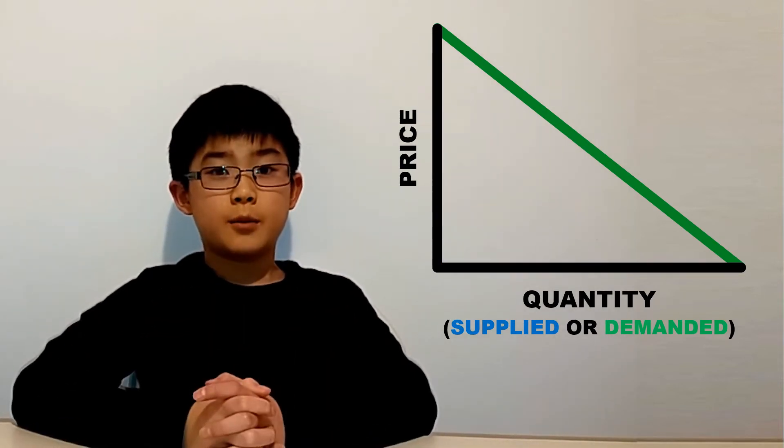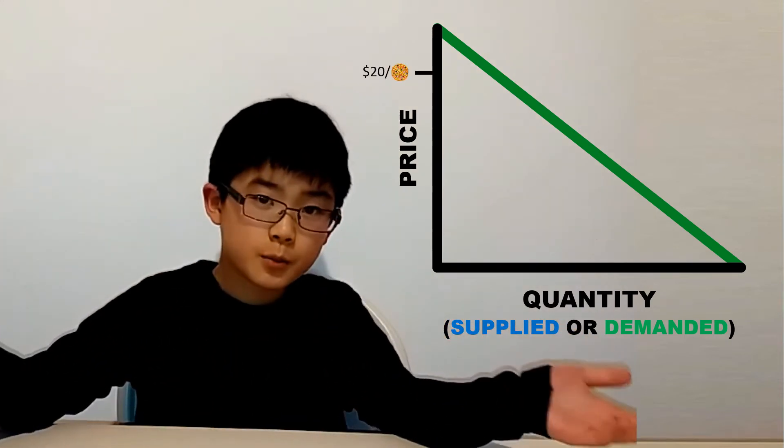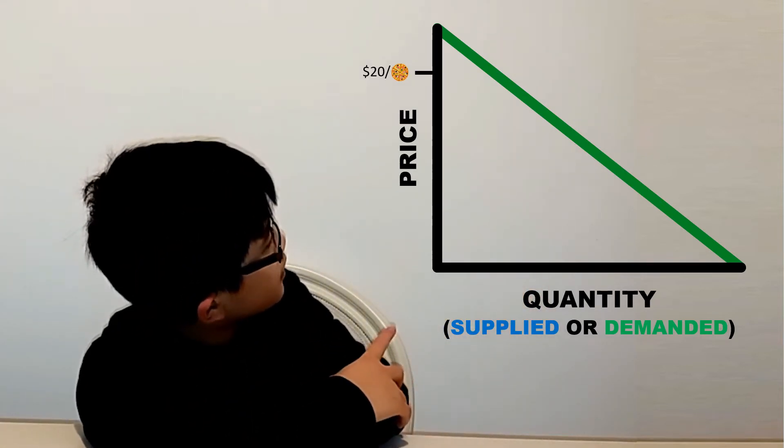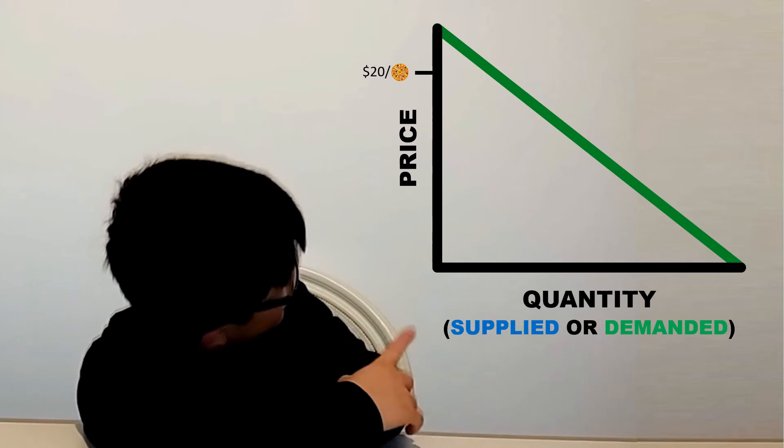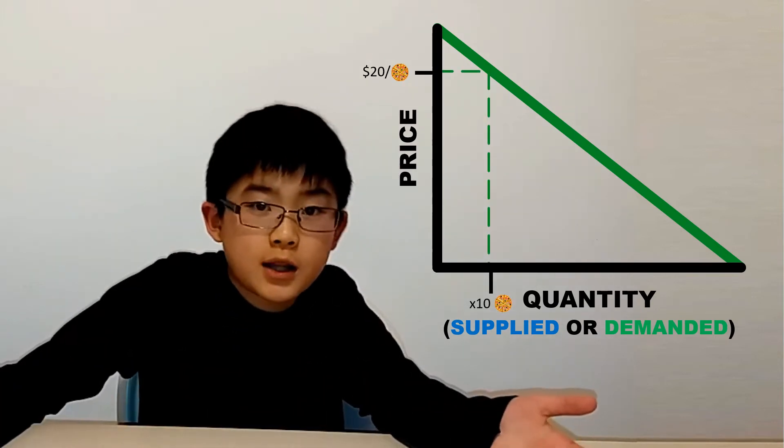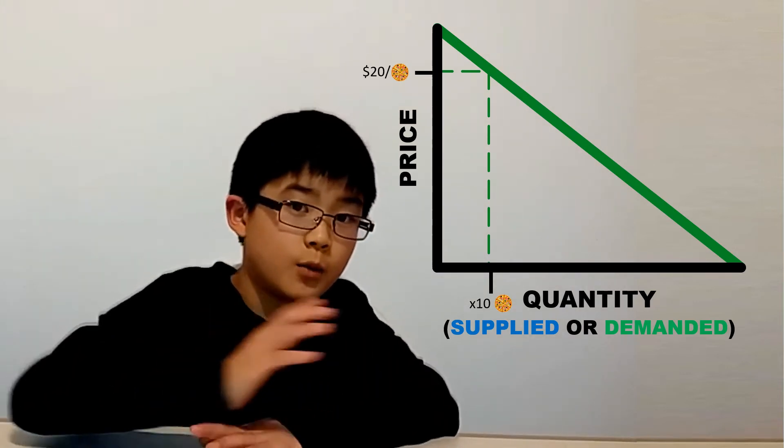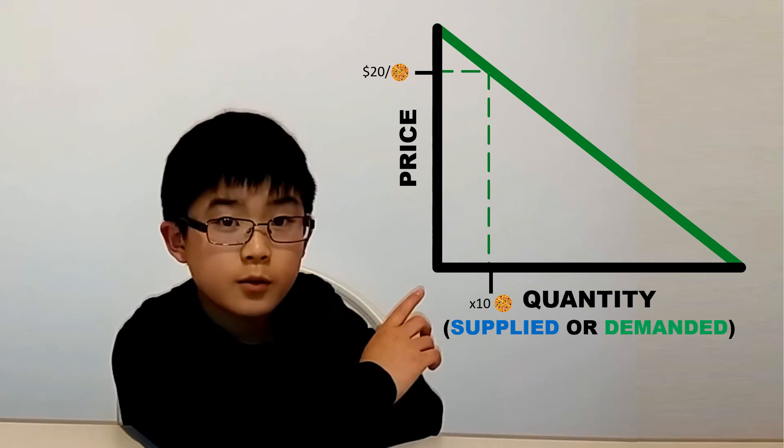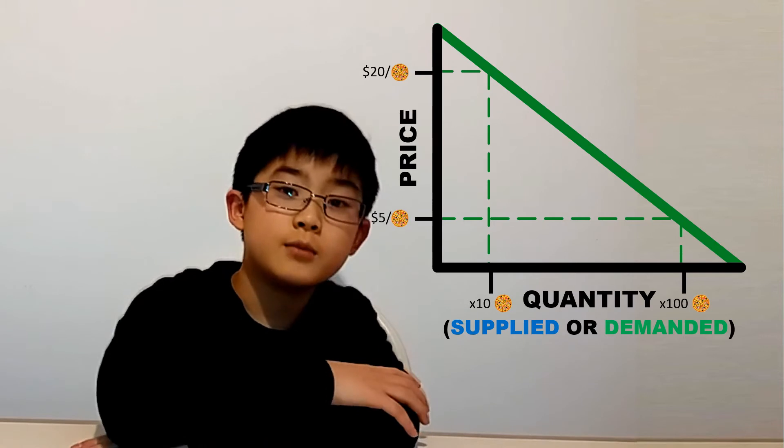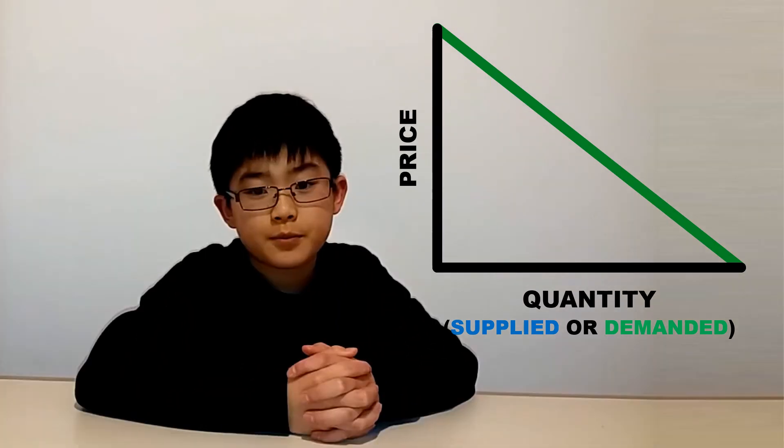We're going to do a hypothetical situation of a $20 pizza, pretty expensive. If we look at our graph, we can draw the line to there and see that the quantity demanded is 10 pizzas. Consumers don't want to buy that many pizzas because the price is so expensive. And when we've got a price of $5, we can see that consumers want to buy a whole lot because a $5 pizza is really cheap.